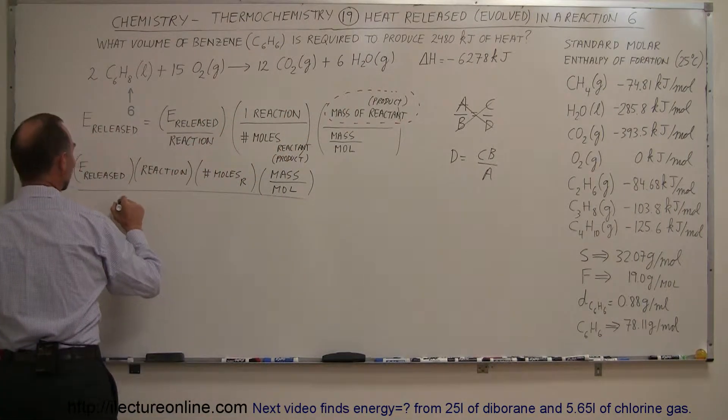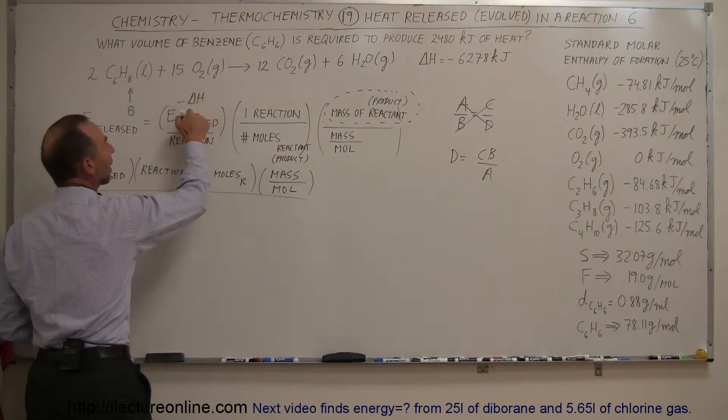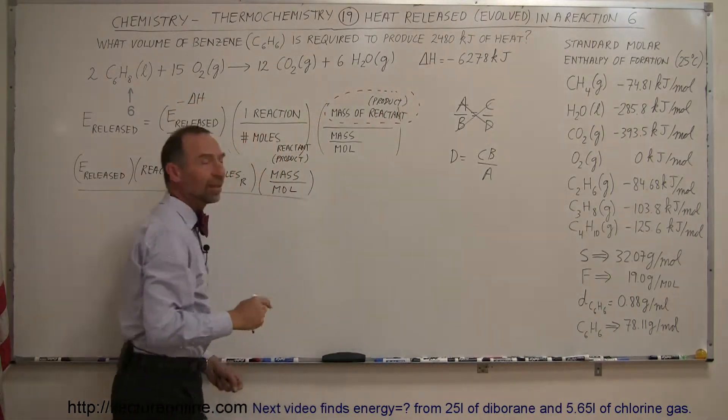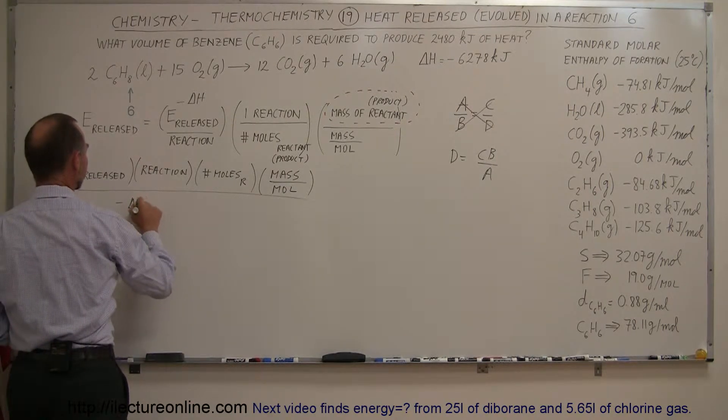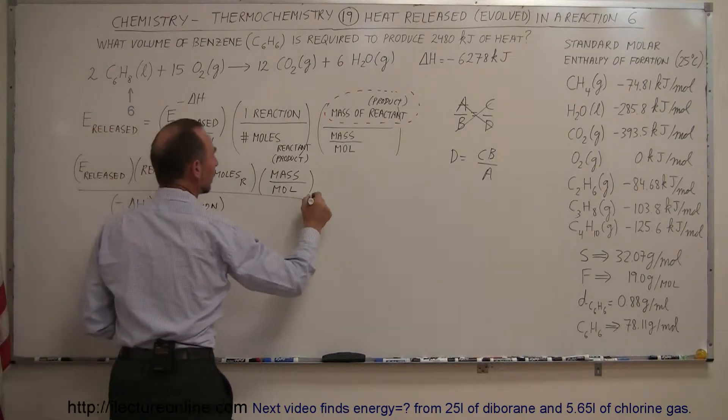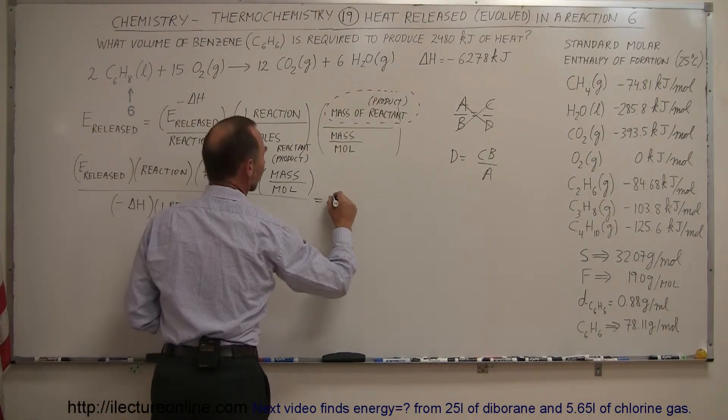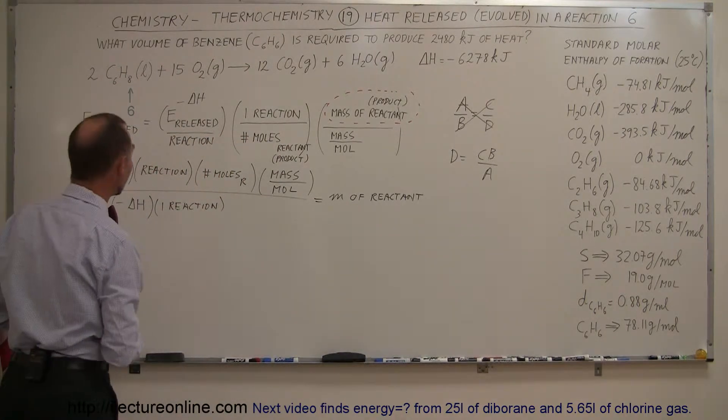So we have the energy released, so this would be the minus delta H, right? So that's the opposite of the delta H that we need to get in there. So that would be the minus delta H times one reaction, and that then gives us the mass of the reactant. Now all we have to do is plug in the numbers associated with this problem.